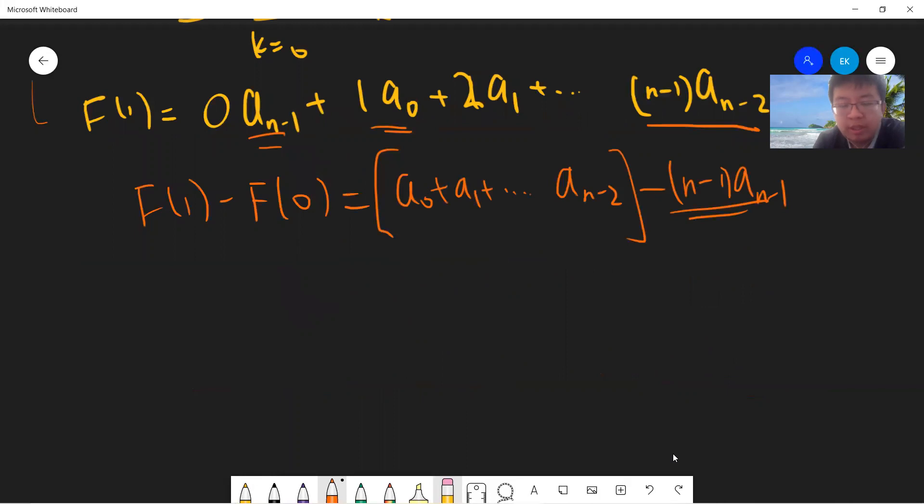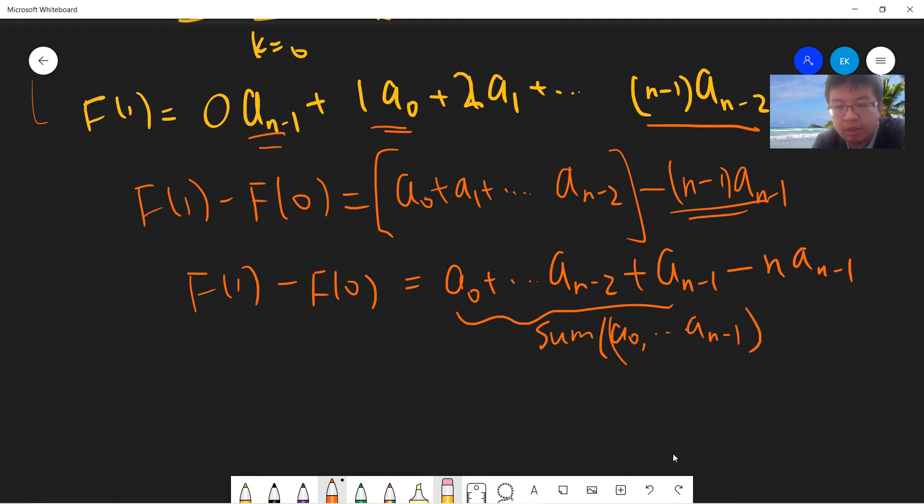Let's massage it. I can write it as a_0 plus a_1 plus up to a_(n-2) plus a_(n-1) minus n times a_(n-1). Notice that this is the sum of a_0 up to a_(n-1). These guys are invariants. So you get f(1) minus f(0), which is—let's call it S, the summation—minus n times a_(n-1).